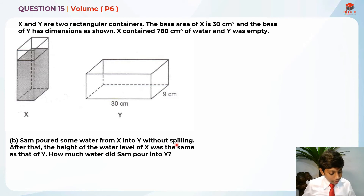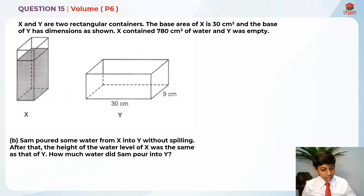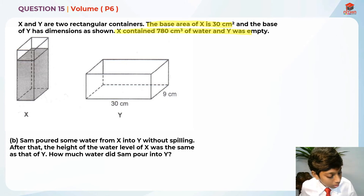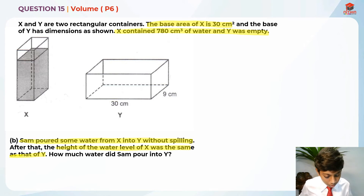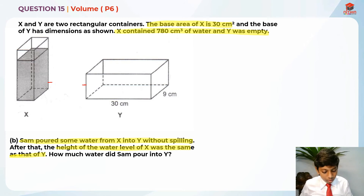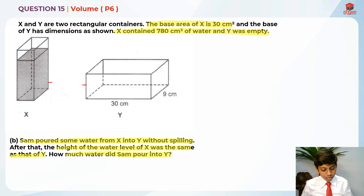Part B: Sam poured some water from X into Y without spilling. After that, the height of the water level in X was the same as that of Y. How much water did Sam pour into Y? Key information: no water was spilt, and X's water level became the same as Y's. We need to find how much water was transferred from X to Y.